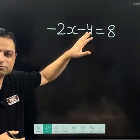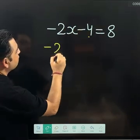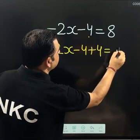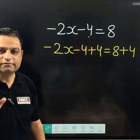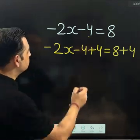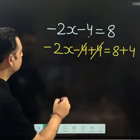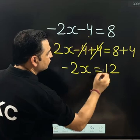So removing this -4 means I will add 4 on both sides. I have added 4 on both sides. This is my first step, and this -4 and 4 obviously cancelled. So this -2x is equal to 8 + 4, which is 12.